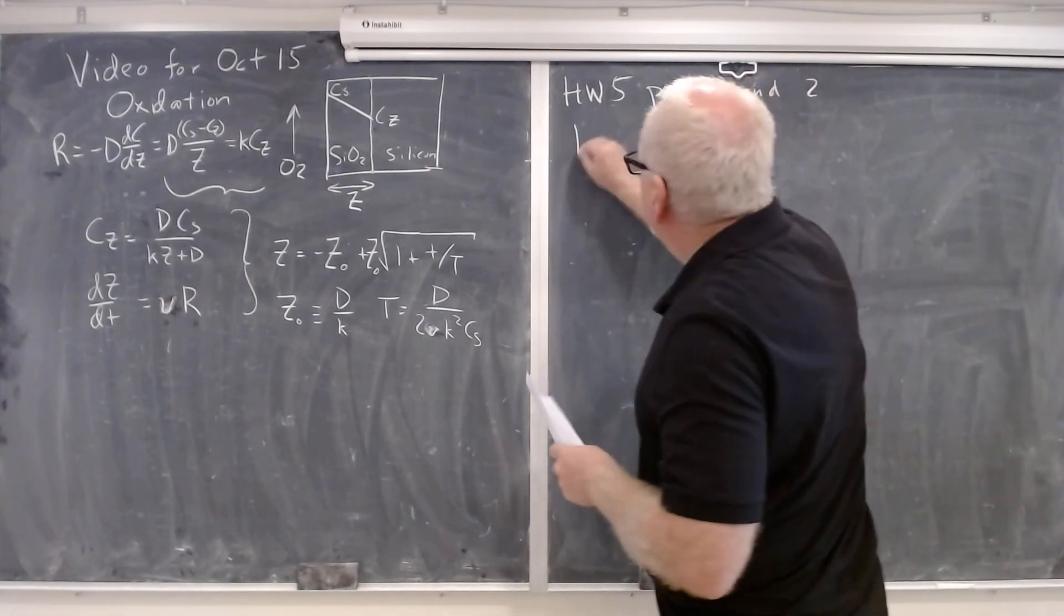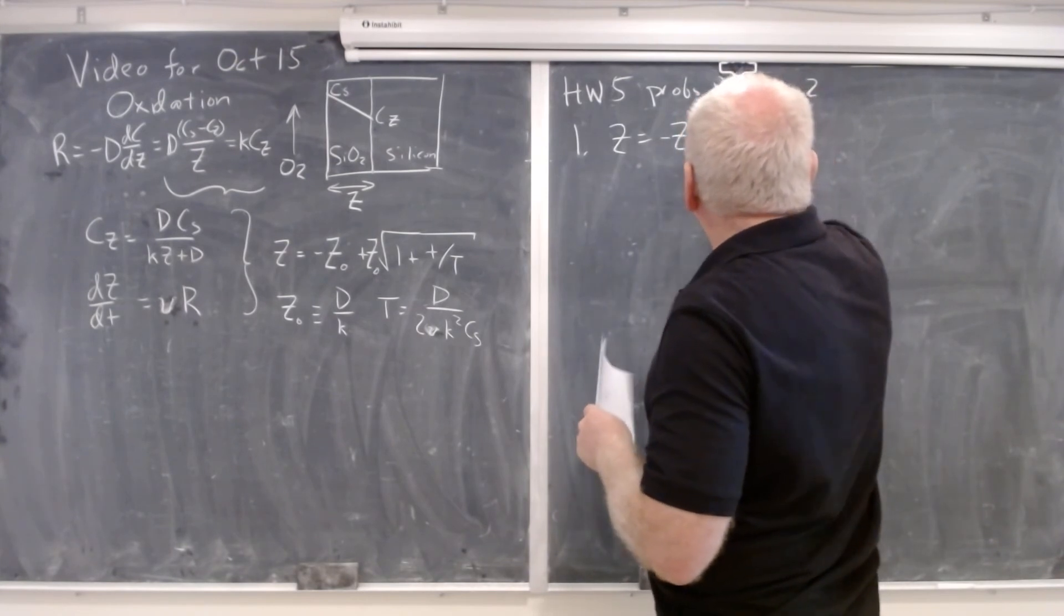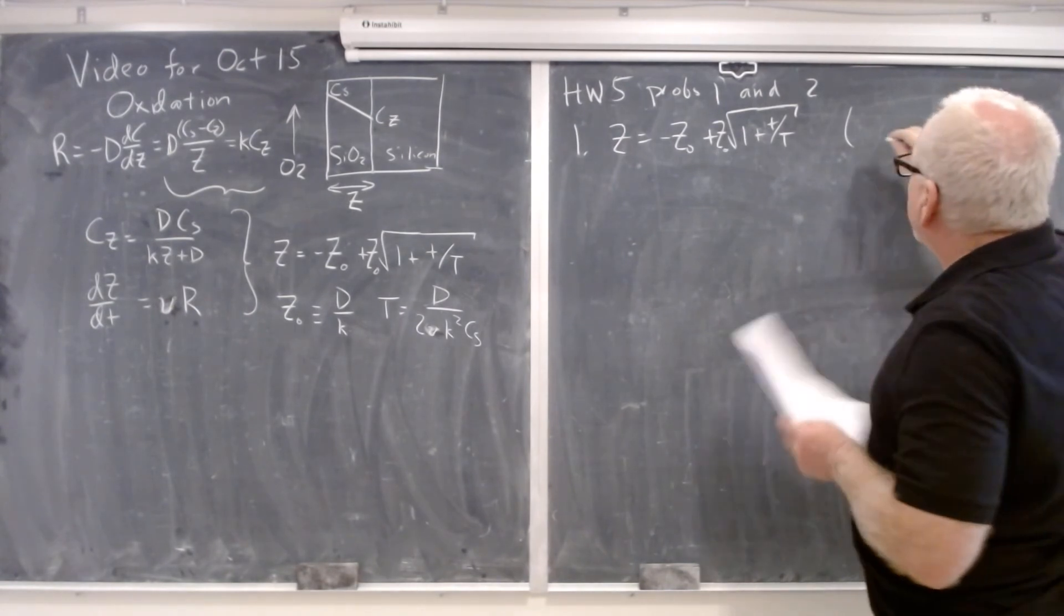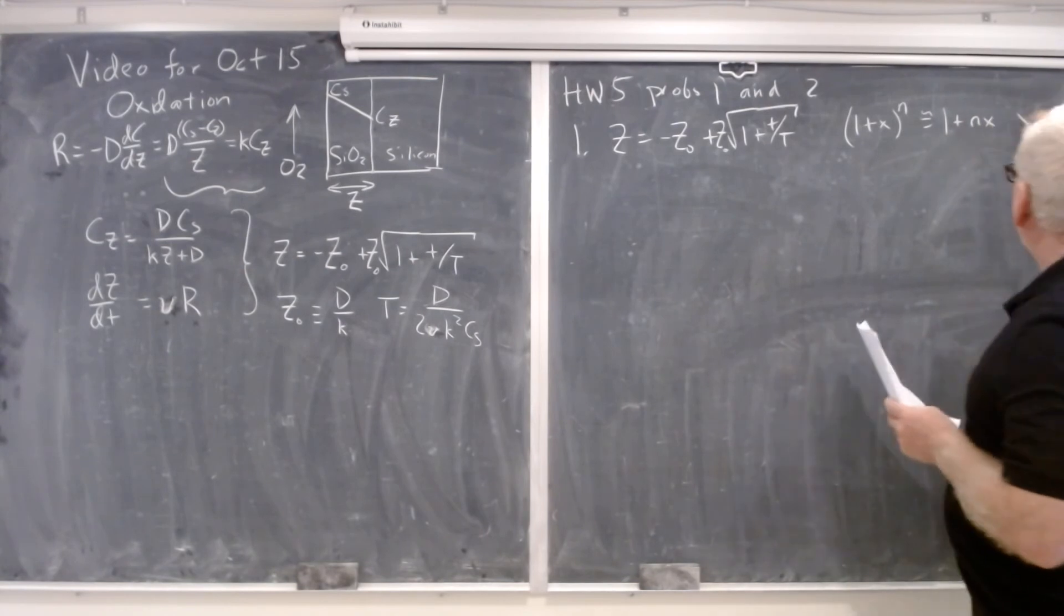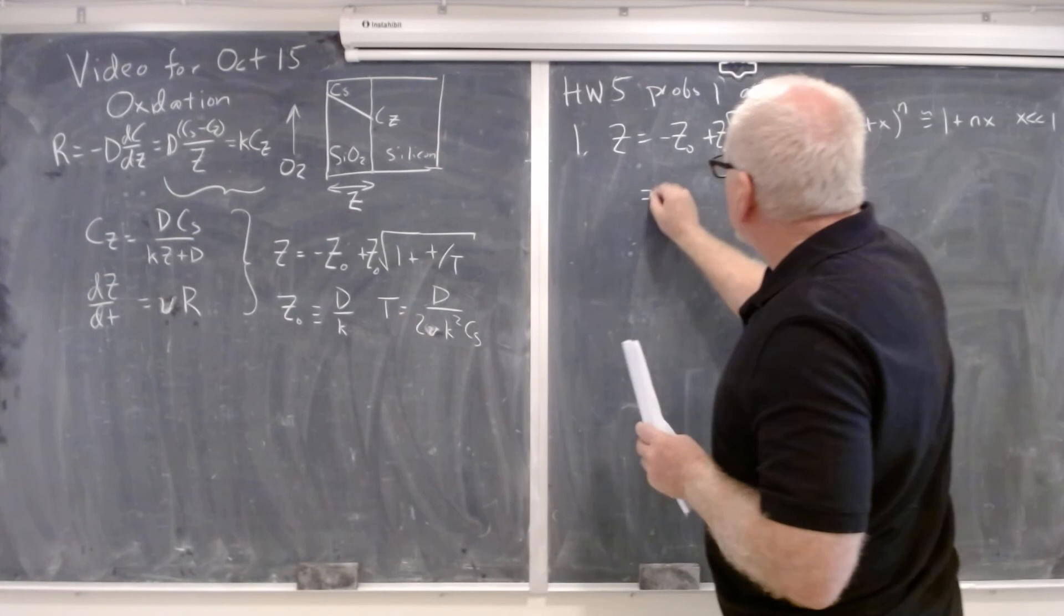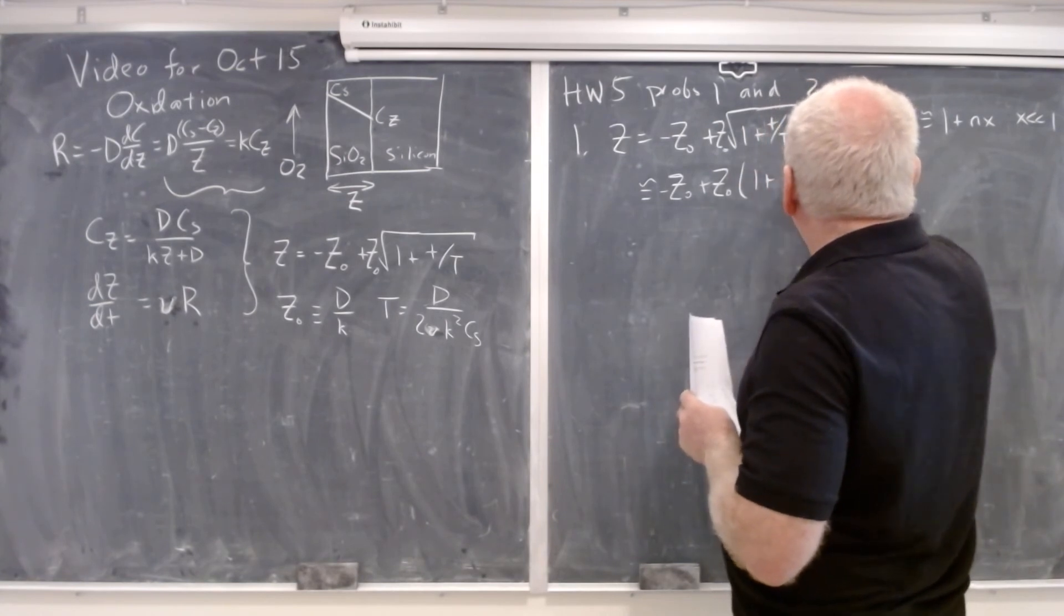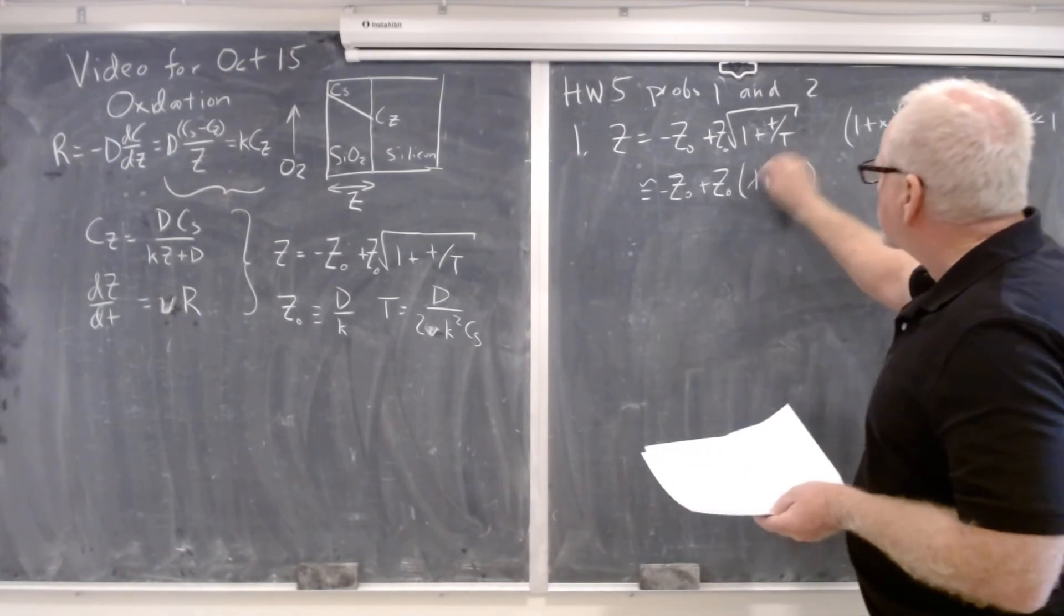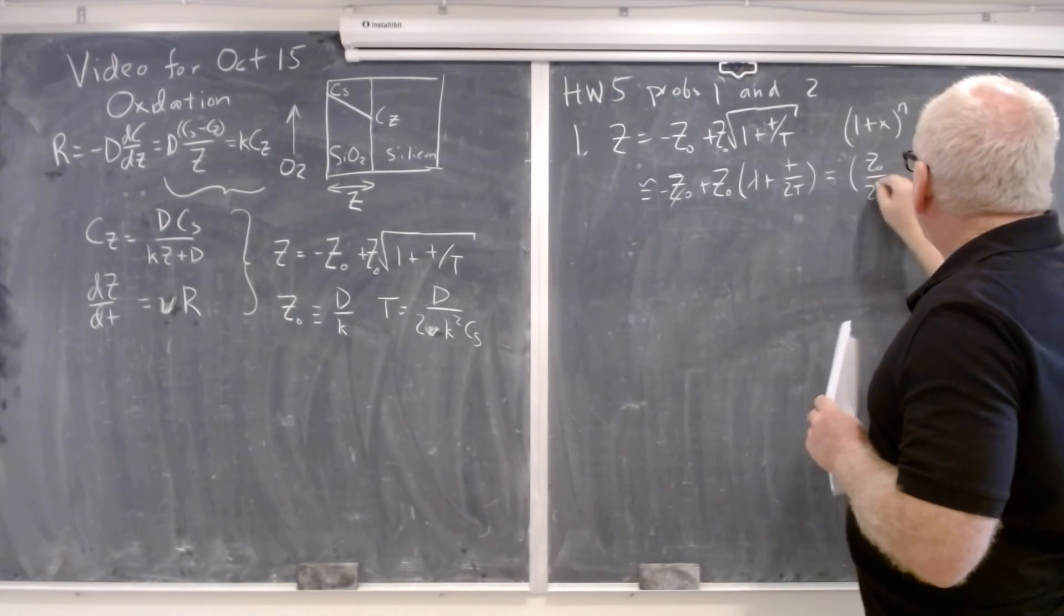Problem one was simply to take the binomial expansion. Z is equal to minus z naught plus z naught times the square root of 1 plus t over T. We went through when we talked about charge neutrality that 1 plus x to the n is approximately equal to 1 plus nx for x much less than 1, which is a standard mathematical principle. So this is approximately equal to negative z naught plus z naught times 1 plus t over 2T, because n here is 1 half. So all you had to do was take that approximation.